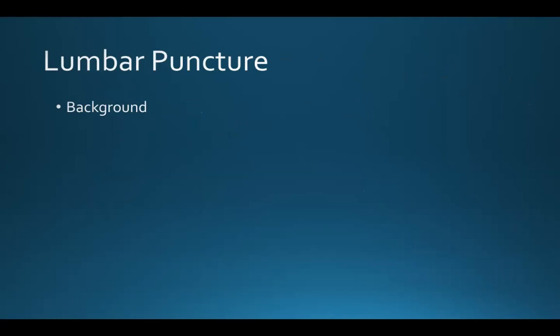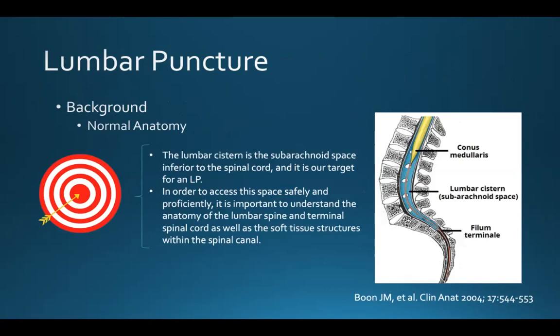If we're going to talk about lumbar punctures, there's a little bit of background to cover. Our target during an LP is the lumbar cistern, which is the subarachnoid space inferior to the spinal cord. In order to access this space safely and proficiently, we have to understand the anatomy of the lumbar spine, the terminal spinal cord, and the soft tissue structures within the spinal canal.